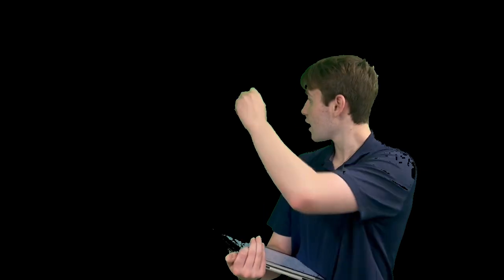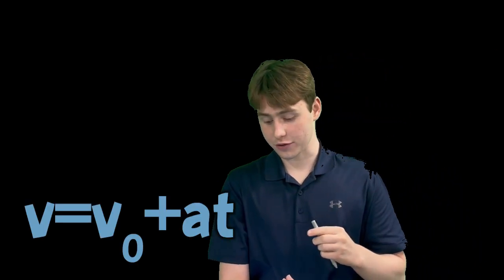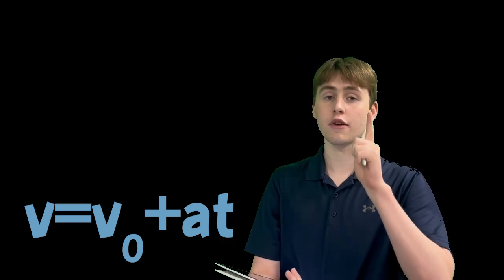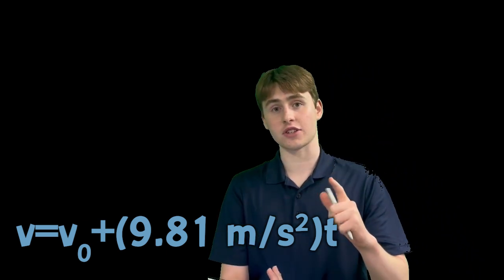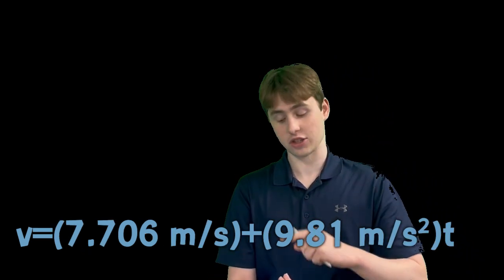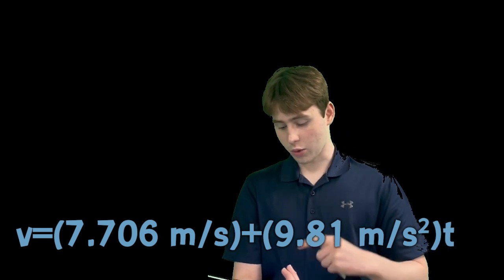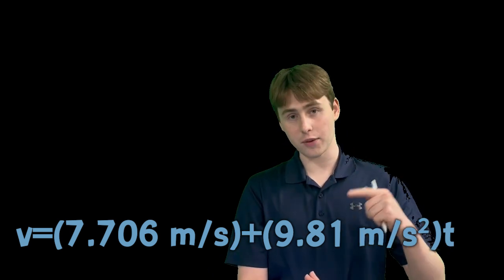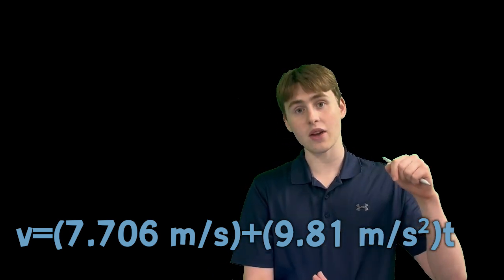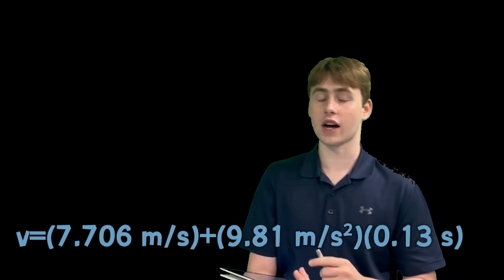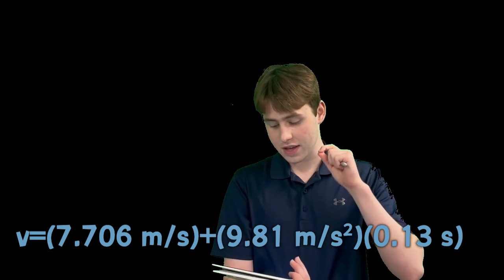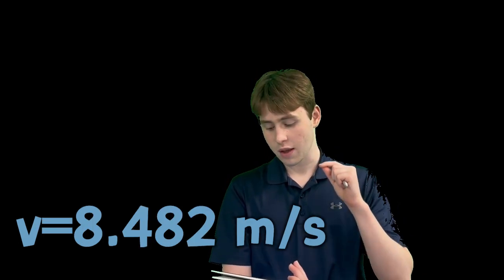Now, this turns into a free fall equation. Peter flies off the roof and reaches the ground. We can now use the equation v_final equals velocity initial plus at, where we substitute a for gravity, because that is the only acceleration on the system. We can use the final velocity from the ramp as his initial velocity going into the fall. So, our equation is velocity final equals 7.706 meters per second plus 9.81 times the time interval of 0.13 seconds. Then, we can calculate the velocity final the instant before he hits the ground to be 8.482 meters per second.